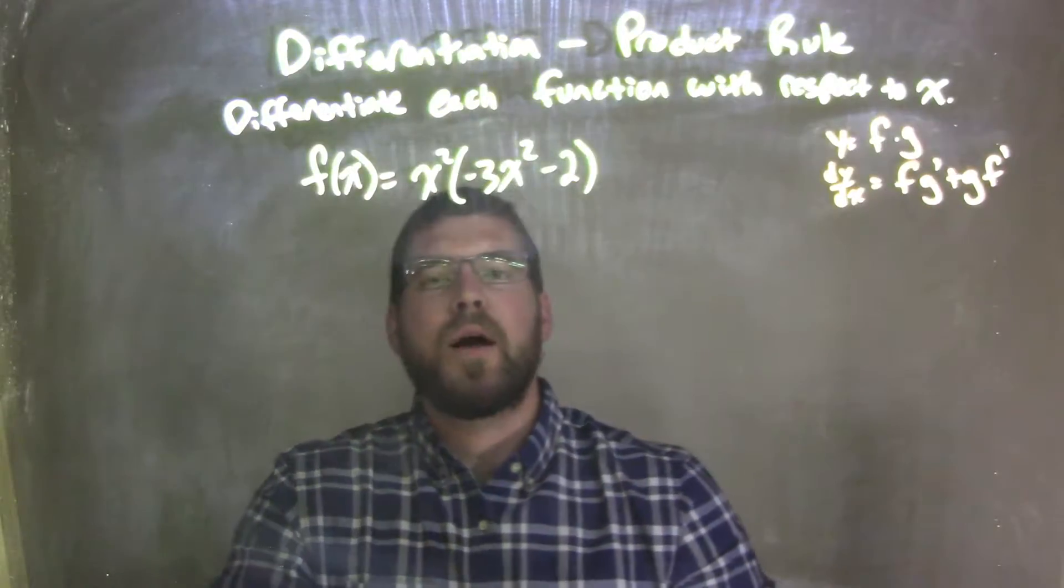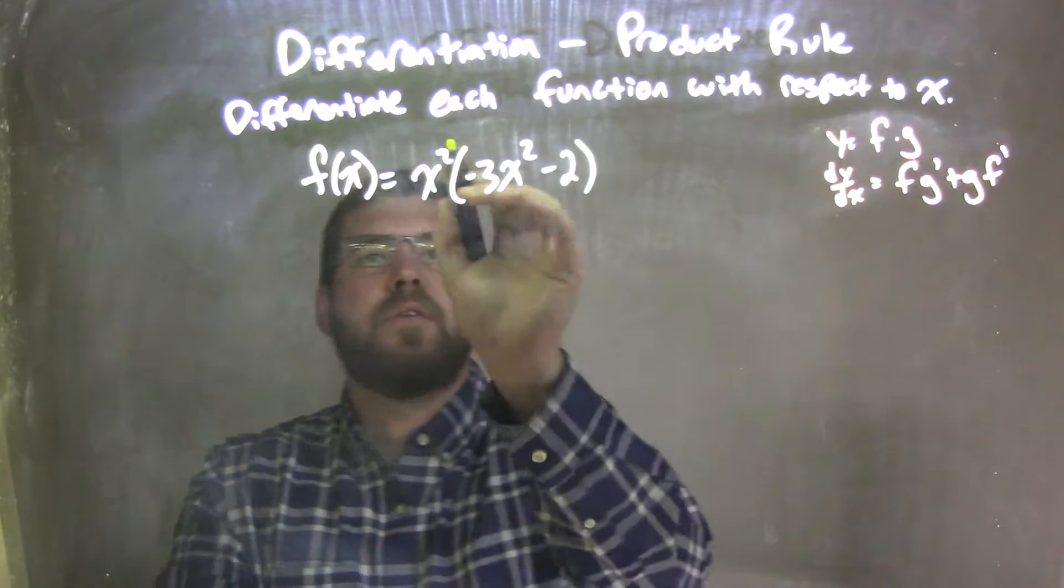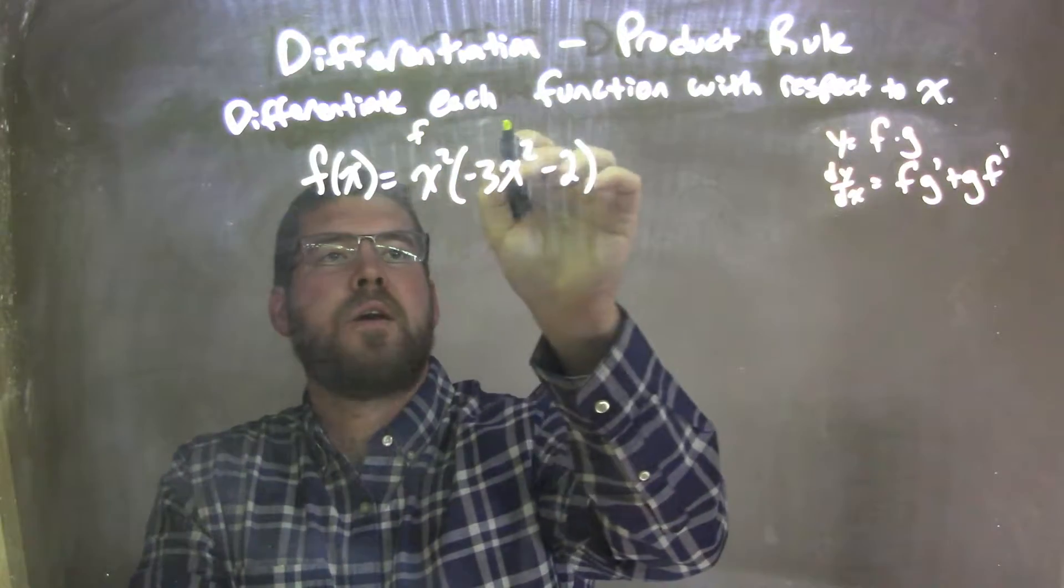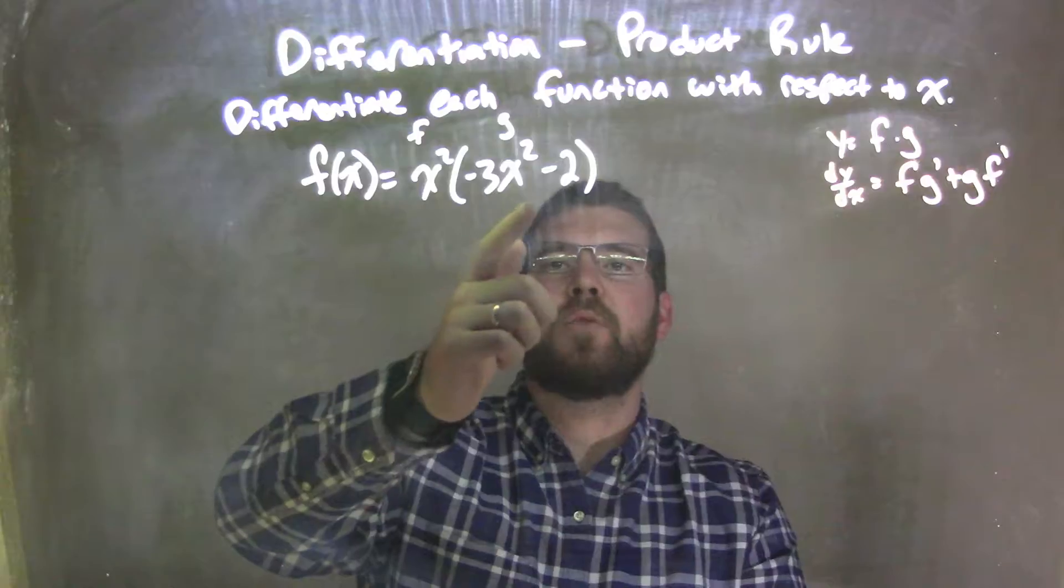Well, if I want to apply the product rule, I need to see that I have my function in two parts. This is f, first part, and this is g. f being x squared and g being negative 3x squared minus 2.